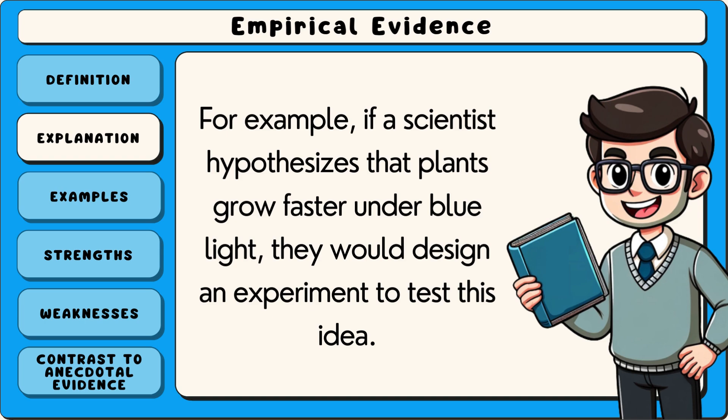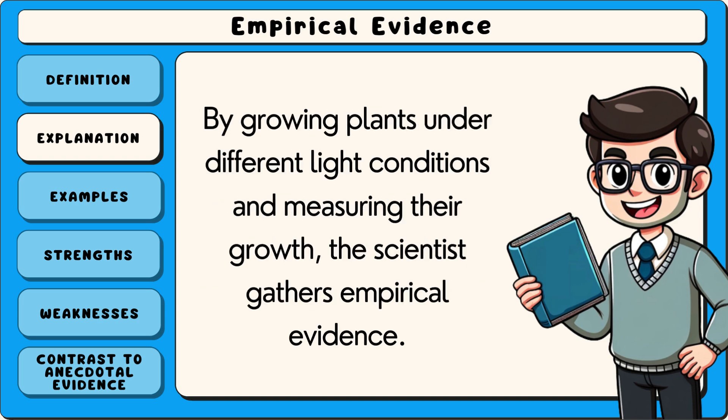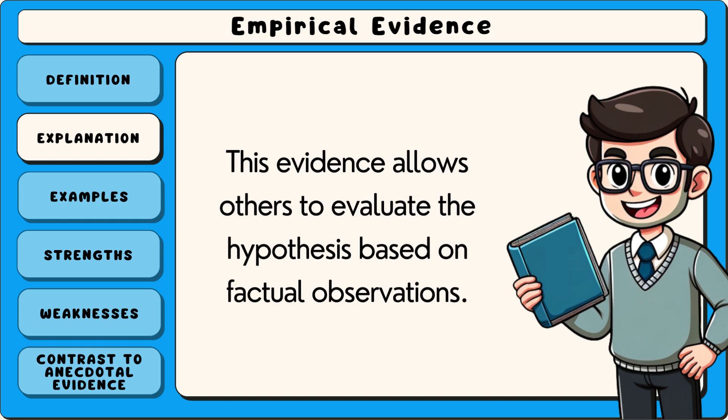For example, if a scientist hypothesises that plants grow faster under blue light, they would design an experiment to test this idea. By growing plants under different light conditions and measuring their growth, the scientist gathers empirical evidence. This evidence allows others to evaluate the hypothesis based on factual observations.